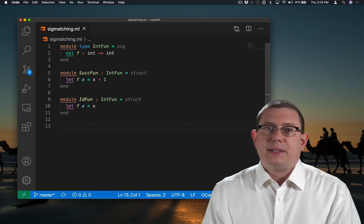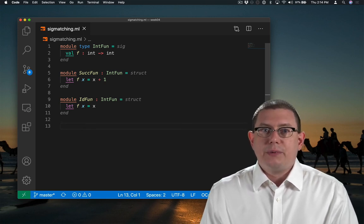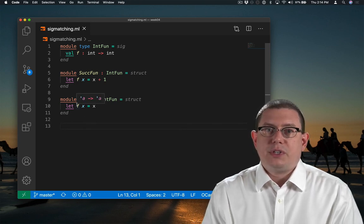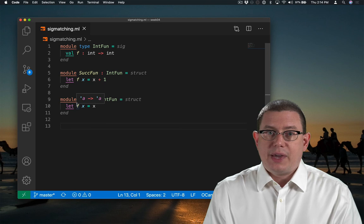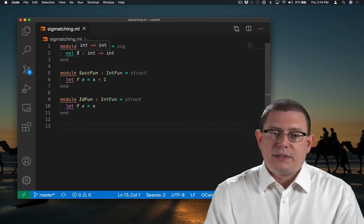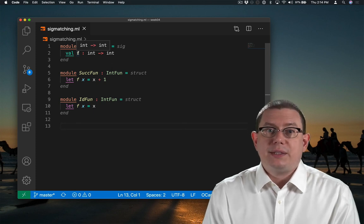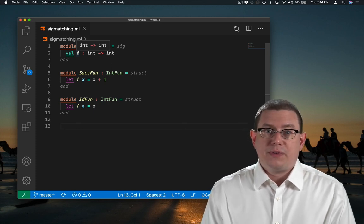That identity function is perfectly happy to take in an integer and return an integer as IntFun requires. The fact that it could also take in other types of values doesn't matter here. It suffices that it's able to take in an int and return an int. So you see the type of f here is really alpha arrow alpha, but that suffices to implement a function of type int arrow int because we can instantiate alpha with int.